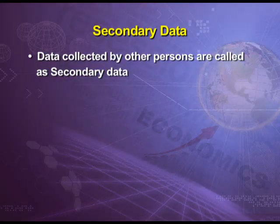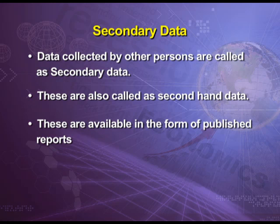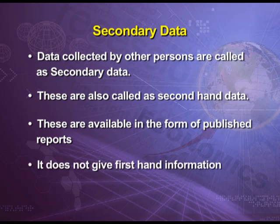Data collected by some other person is known as secondary data, because it is not collected by the investigator — rather it has been collected by another person. That is why it is also known as second-hand data. This data is available in the form of published reports. It does not give us first-hand information because the information has already been collected, printed, and published by someone else, and we are just using it for our own study.